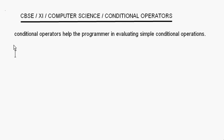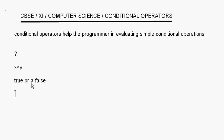The symbol used for representing conditional operators is a question mark and a colon. Simple conditions like x greater than y can result in either true or false — those are the only two possible results.